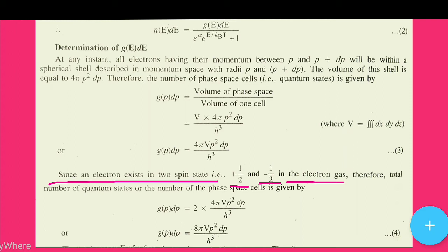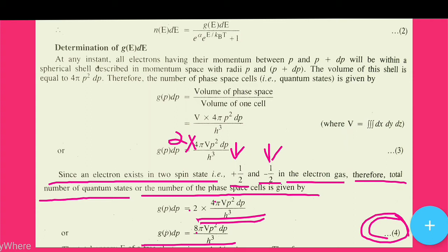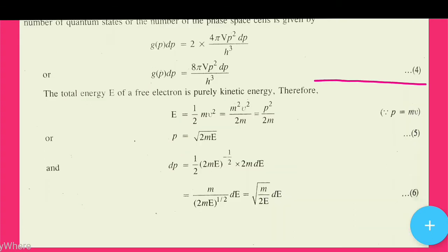Since an electron exists in two spin states — plus half and minus half — in the electron gas, the total number of quantum states (phase space cells) is given by multiplying by 2: one for +½ and one for −½. Therefore g(p)dp gets multiplied by 2, giving us equation number 4.